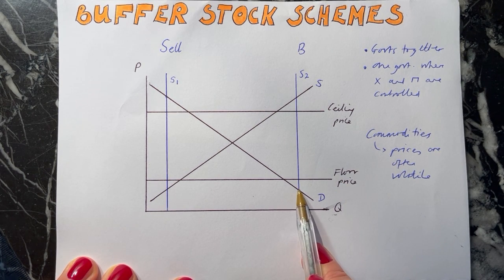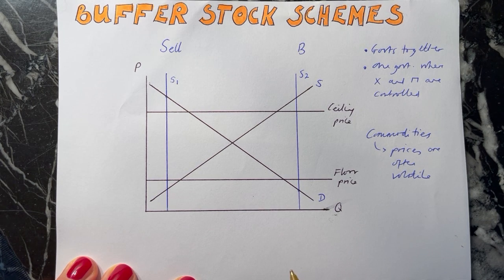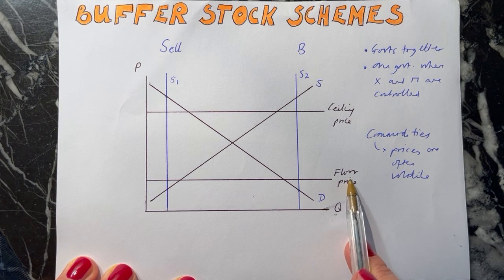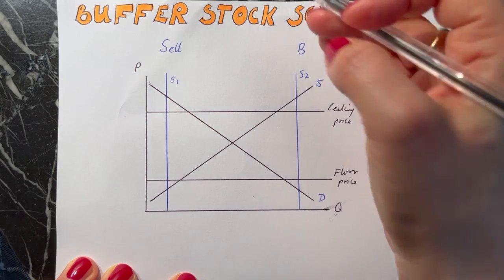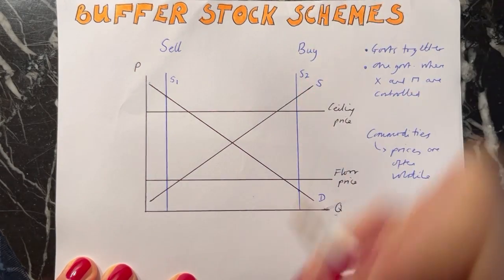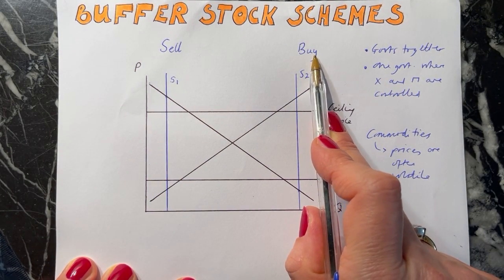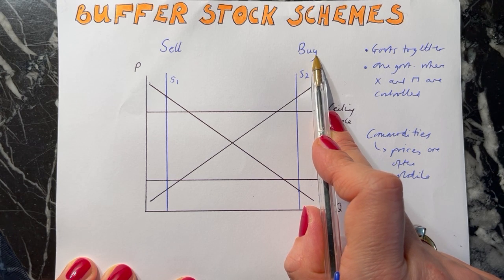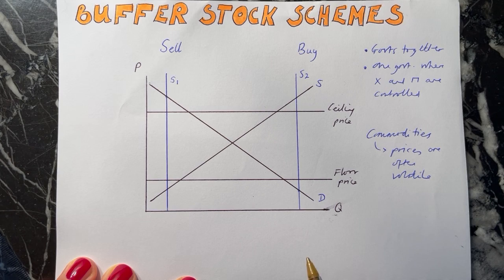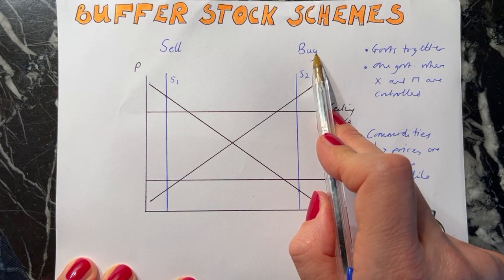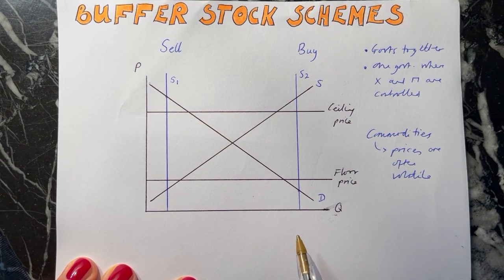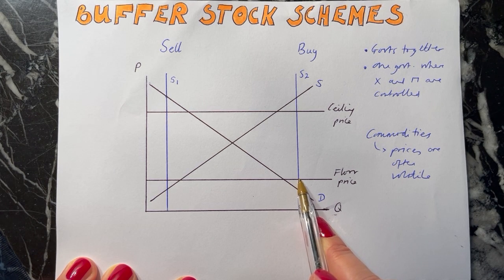What they need to do is raise the price using the buffer stock scheme to the closest acceptable price, which is the floor price. The way they do this is they buy the cocoa from the market. When they buy it up they're essentially increasing the demand for the cocoa. When they buy, because the demand goes up, this makes the price go up - essentially it's like the demand curve shifting slightly to the right to get to this new equilibrium.